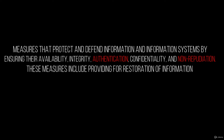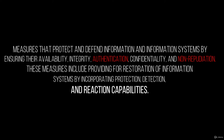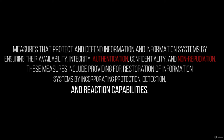These measures include providing for restoration of information systems by incorporating protection, detection, and reaction capabilities. Note two new parameters beside the CIA triad: information assurance ensures five things. Authentication means checking identity before allowing access, and non-repudiation means knowing who sent or received the information.